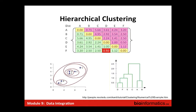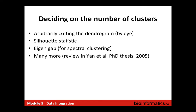Deciding on the number of clusters: unfortunately there is no golden bullet — no single metric that will tell you exactly how many clusters there are. People commonly use arbitrary dendrogram cuts based on prior belief, the silhouette statistic, the eigengap, or the Tibshirani gap statistic. There are reviews with different examples, but you will not find one metric that reliably tells you exactly how many groups there are.